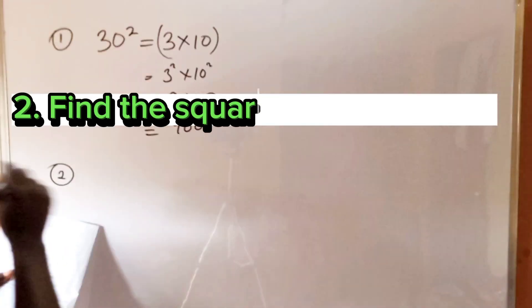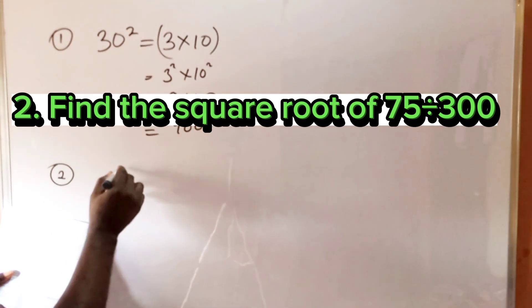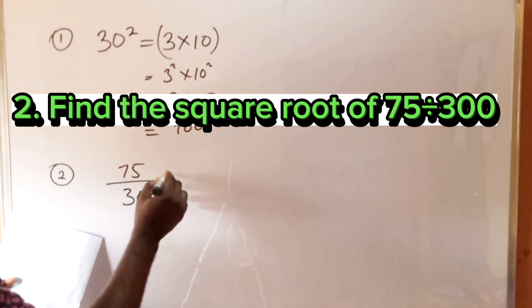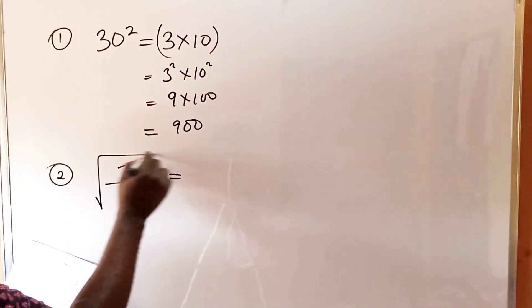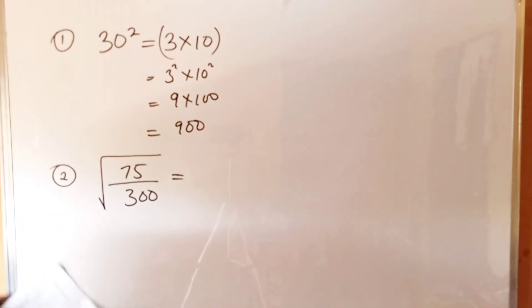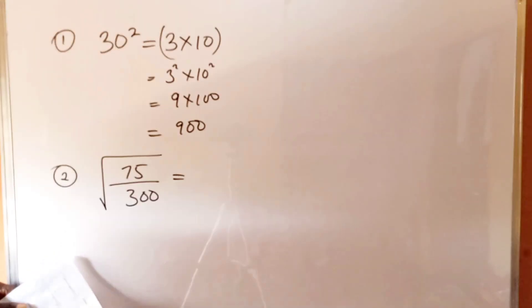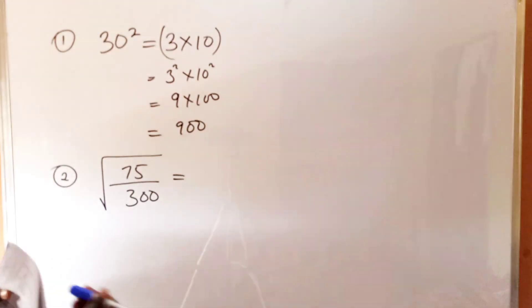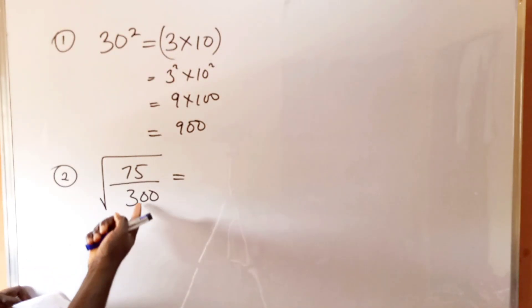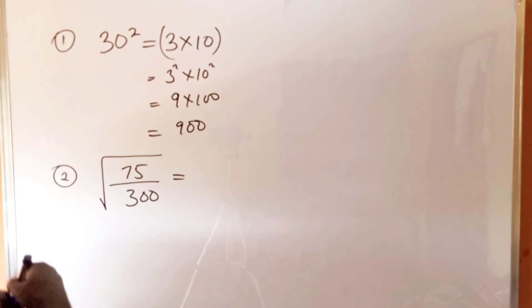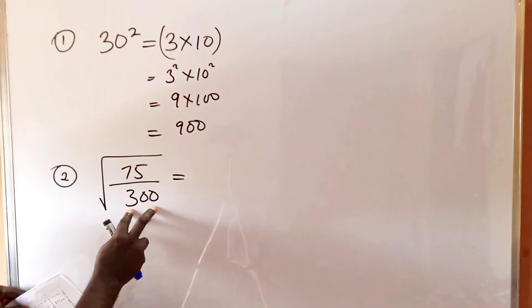Question number two asks us to find the square root of 75 divided by 300. We cannot directly find the square root of 75, likewise we cannot find the square root of 300. So we look for a number that can divide both. If we use 5 to divide, 300 gives 60 and we can't find the square root of 60. But if we use 3, 300 gives 100 and we can find the square root of 100.